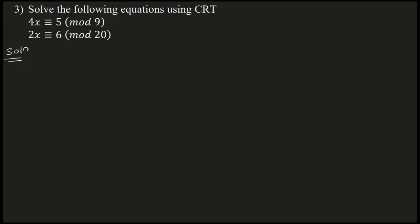By the data, we have 4x congruent to 5 mod 9. We need to convert this to standard form — meaning on the LHS, we want only x. If you don't have standard form, you first convert it to standard form.